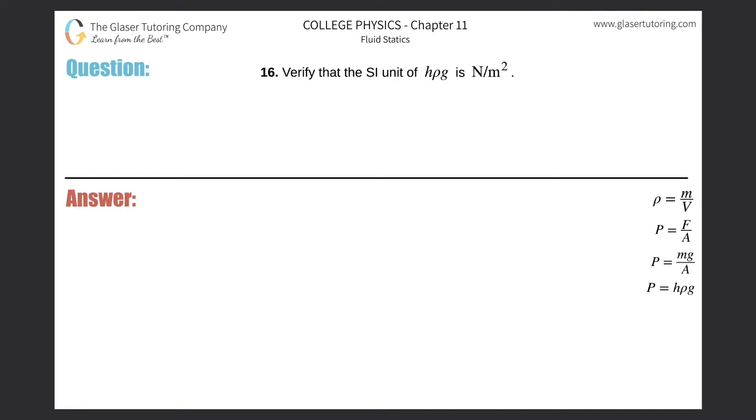Number 16, verify that the SI unit of h rho g is newton per meter squared. So what I'm going to do is, since I'm showing that they're equivalent, I'm going to create an equation here.